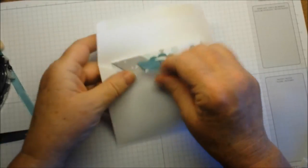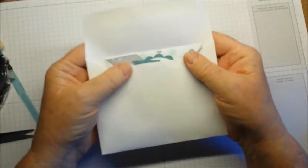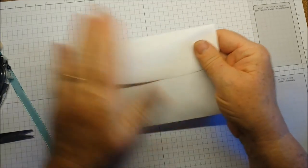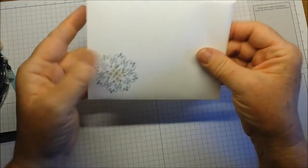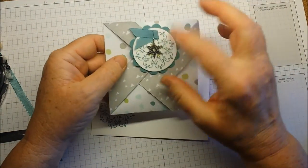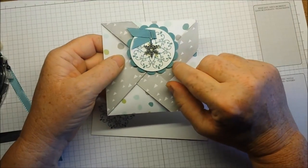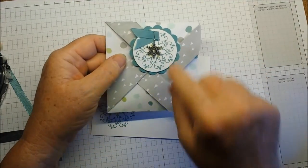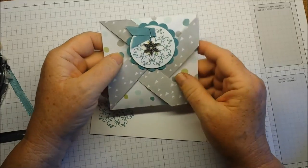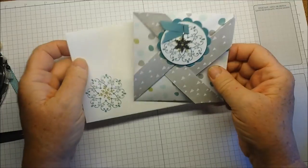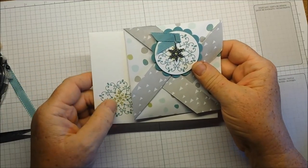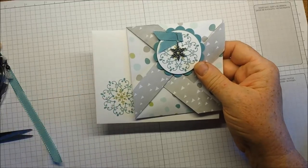It fits into a standard medium envelope. You could put an envelope liner in. So I used the All Is Calm designer series paper, Lost Lagoon, Letterpress Winter, the Snowflake embellishments, and medium envelopes. I used Lost Lagoon and Pear Pizzazz ink.